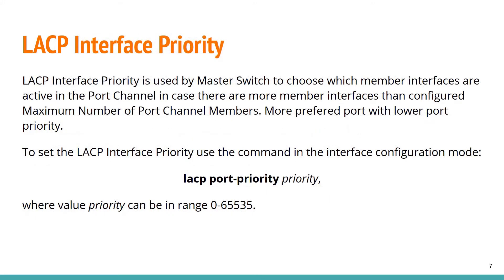LACP interface priority: LACP interface priority is used by the master switch to choose which member interfaces are active in the port channel, in case there are more member interfaces than the configured maximum number. A more preferred port has a lower port priority. To set the LACP interface priority, use the command 'lacp port-priority' in interface configuration mode, with a priority value in the range from 0 to 65535.